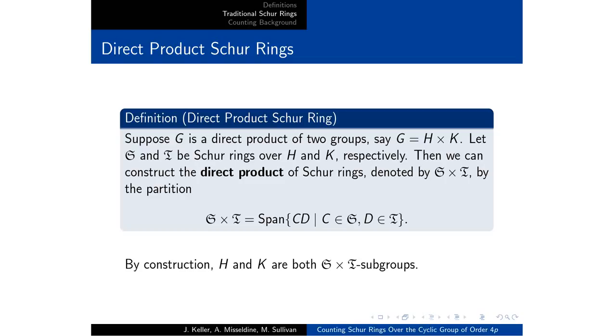We also have direct product Schur rings. So given a group that is a direct product of other groups, given Schur rings over each of those groups, the direct product Schur ring will be the span of C and D, C and D being classes of each of those Schur rings. It's important to note that H and K are both S-subgroups of this new Schur ring.